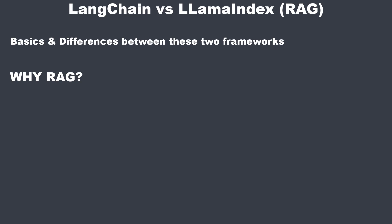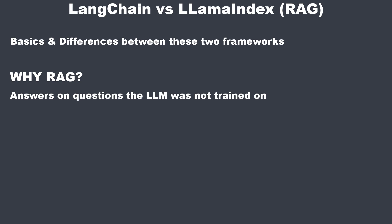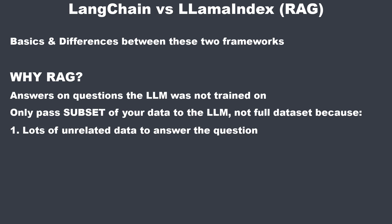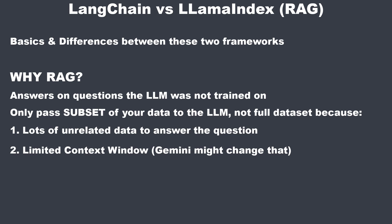When you want an LLM to generate answers on data that it was not trained on, you can directly pass the data to the LLM in the prompt. But you probably don't want to pass your complete dataset to the LLM, since first it's a lot of unrelated data — so-called noise — and second, many models are not able to handle this amount of data. This is the so-called context window limitation. This is why you want to store your data in a database, query the required data, and pass this small piece of data to the LLM.